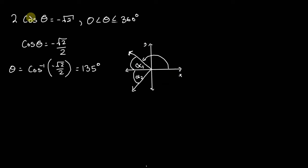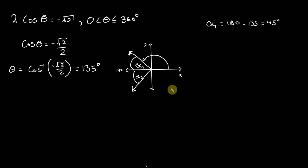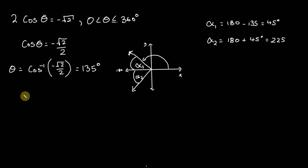So how do we find that second solution? Well, if we know our first solution is 135 degrees, then alpha sub 1 is 180 minus 135 degrees, which gives us 45 degrees. And therefore alpha sub 2 is going to be 180 plus 45 degrees, which gives us 225. So we can say theta equals 135 degrees and 225 degrees.